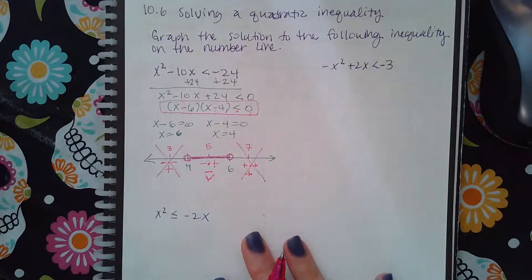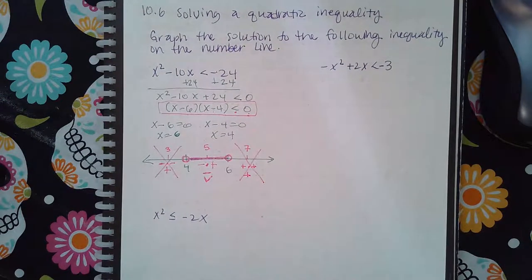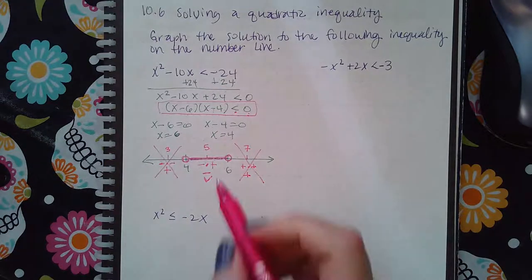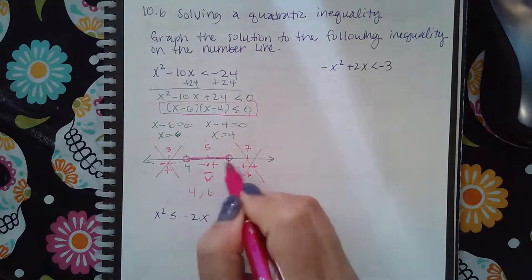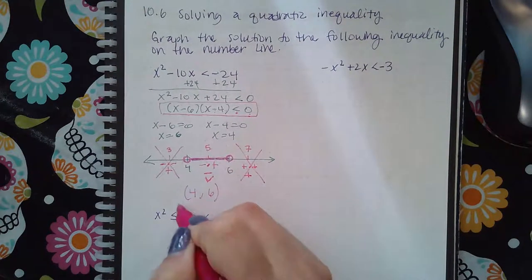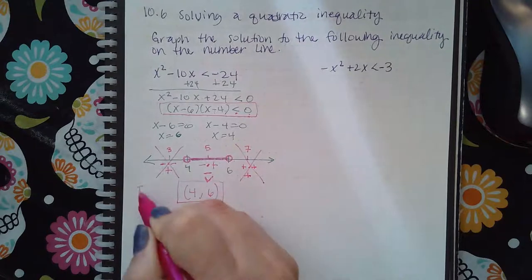Now if they asked me for the solution as an interval, which they will eventually, and we might as well get used to it now, then it would be from four to six. And then because they're both open dots, it would be parentheses. So this is the interval.